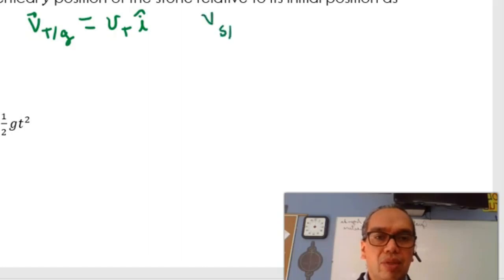relative to the train, which was negative vs cosine of the angle i plus vs sine of the angle j.